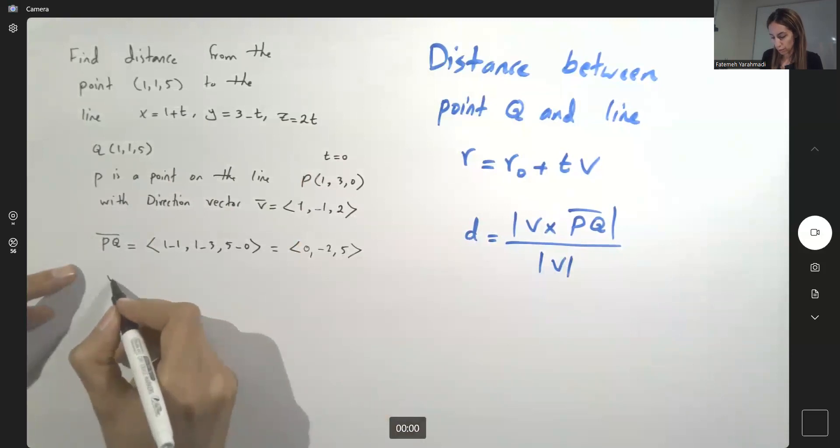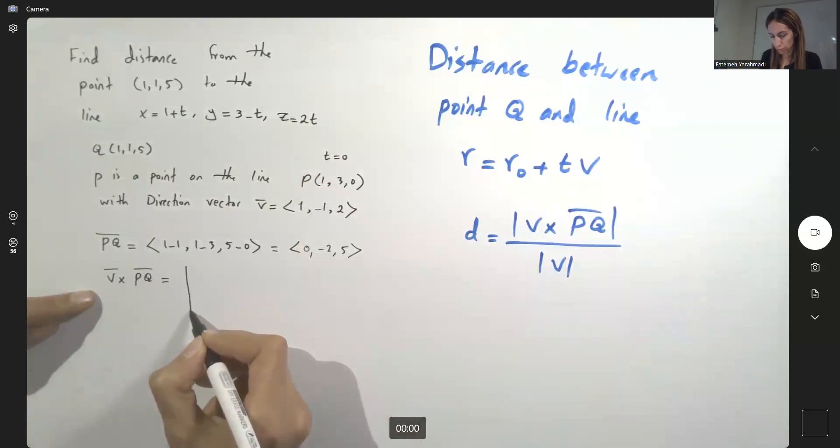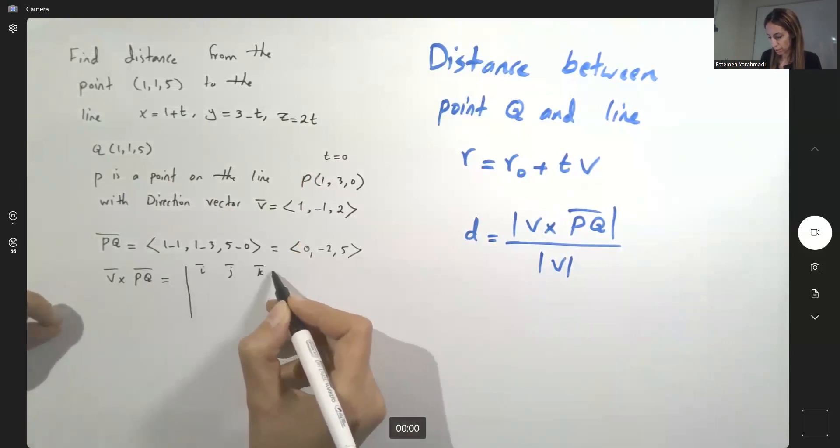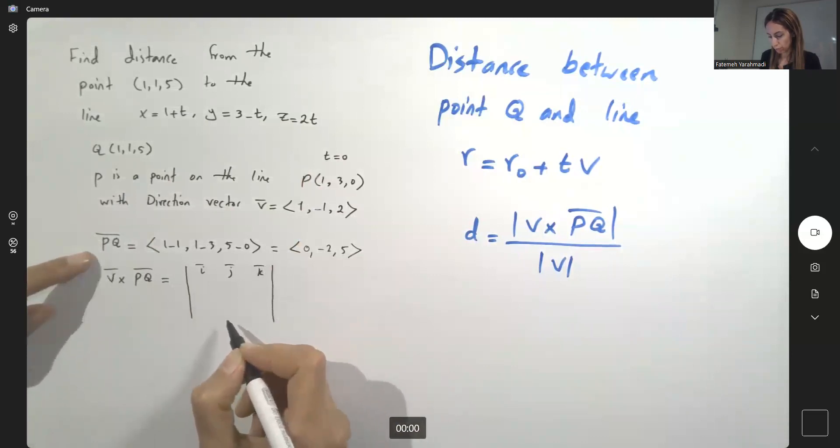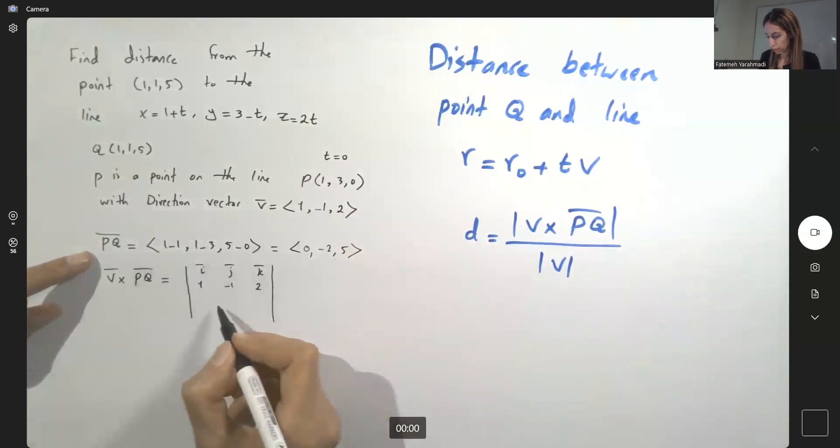Now we need to find the cross product between V and PQ which is equal to the determinant. Unit I, J and K and elements of V are 1, negative 1 and 2, elements of PQ are 0, negative 2 and 5.